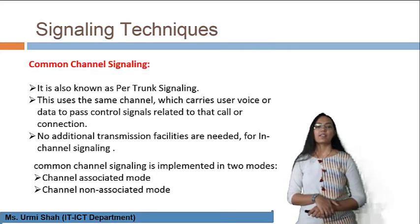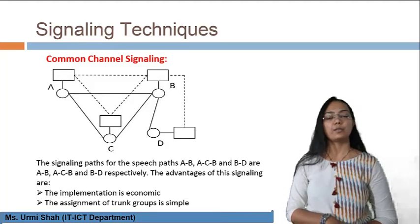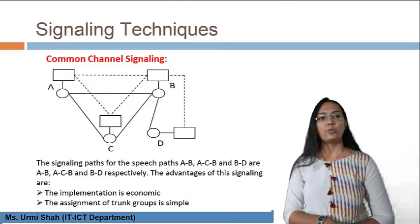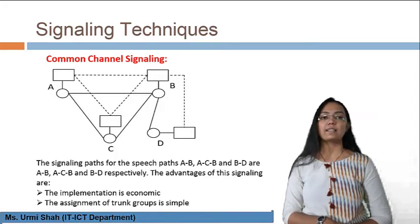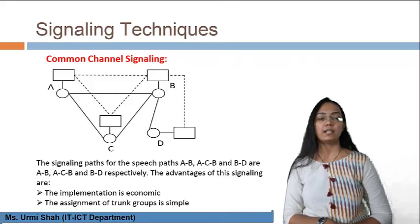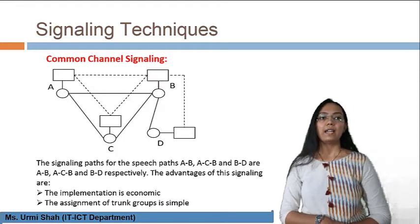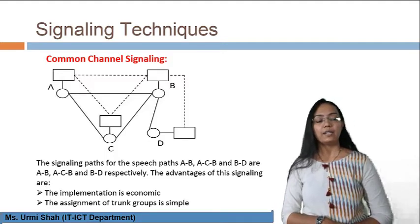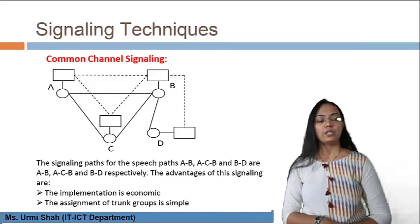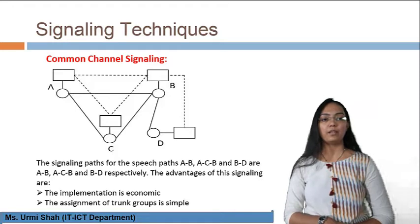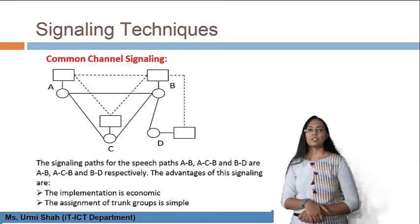For further analysis of common channel signaling, consider the diagram showing stations A, B, C, and D. For the transfer of signals across all trunk groups, the signaling path for speech paths A-B, A-C-D, and B-D are A-B, A-C-D, and B-D respectively. The advantages of this signaling are that implementation is economic, assignment of trunk groups is simple, and it is a widely used signaling scheme.